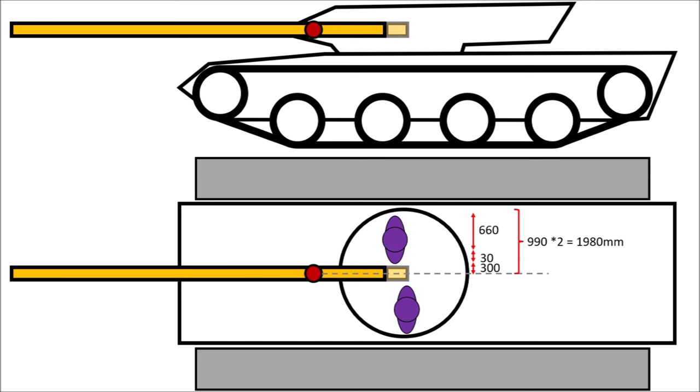Because we want a balanced turret, so it can turn in every situation easily, we need a counterweight at the back to move the center of gravity to the rotational axis.